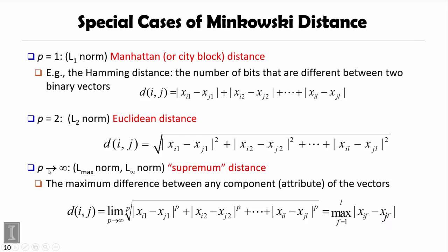If p goes to infinity, we are dealing with L infinity norm or L max norm, also called supremum distance, defined as a limit for p goes to infinity. In that case, the distance is really the maximum difference between any attribute of the vectors. For example, for f from 1 to L, the maximum such absolute value of the distance is the distance of L infinity norm or supremum distance.